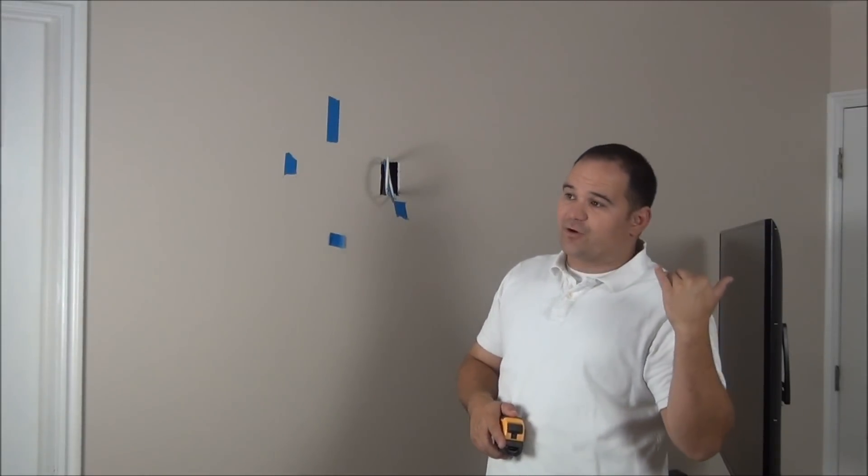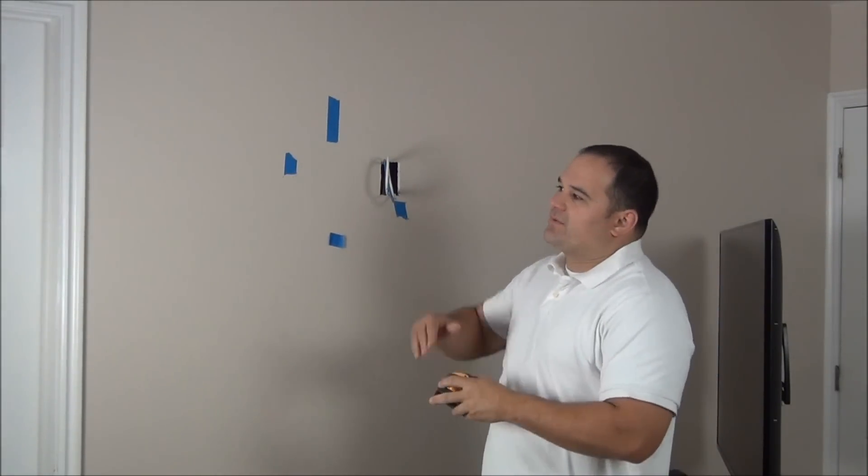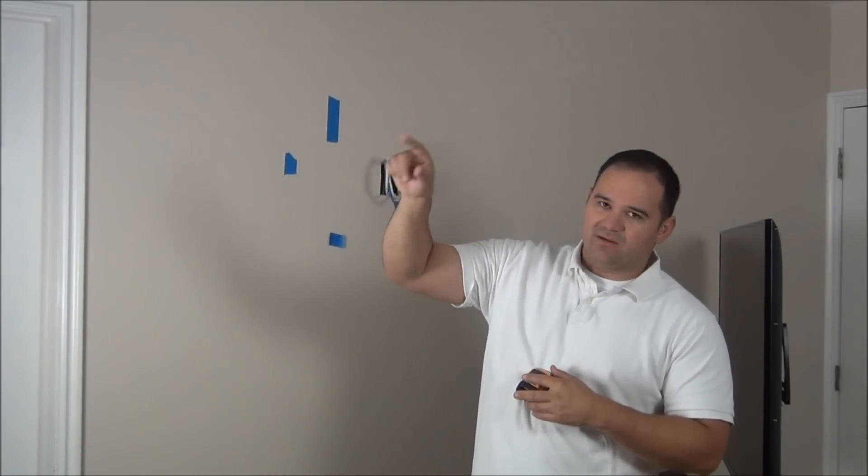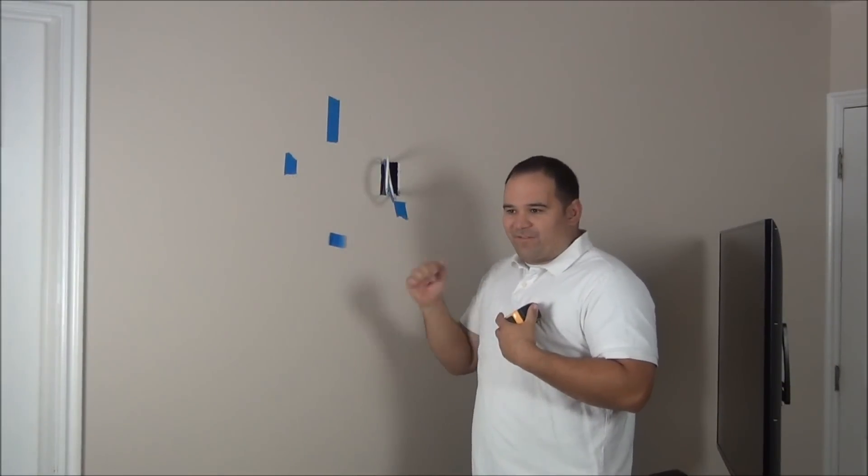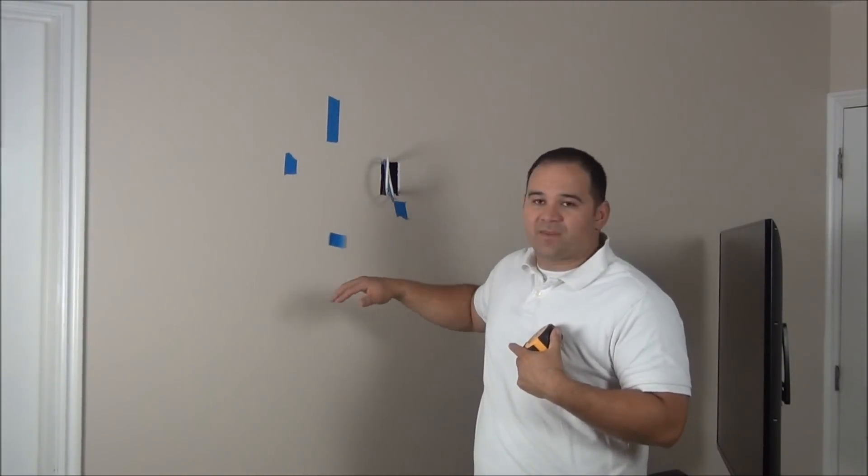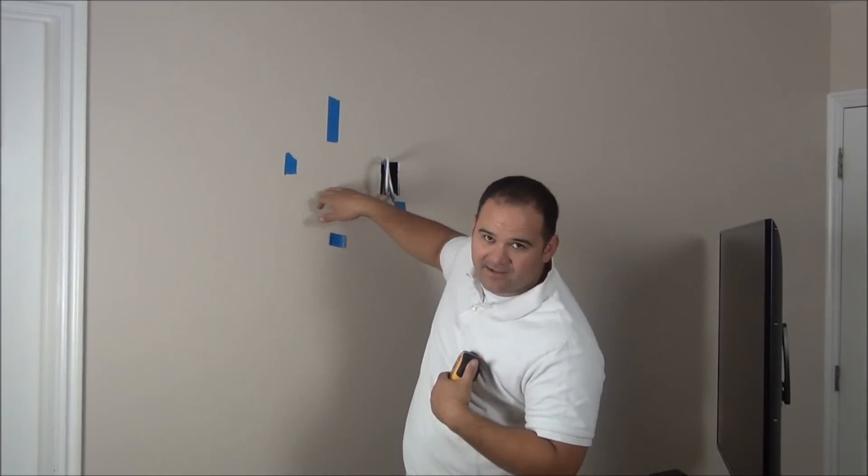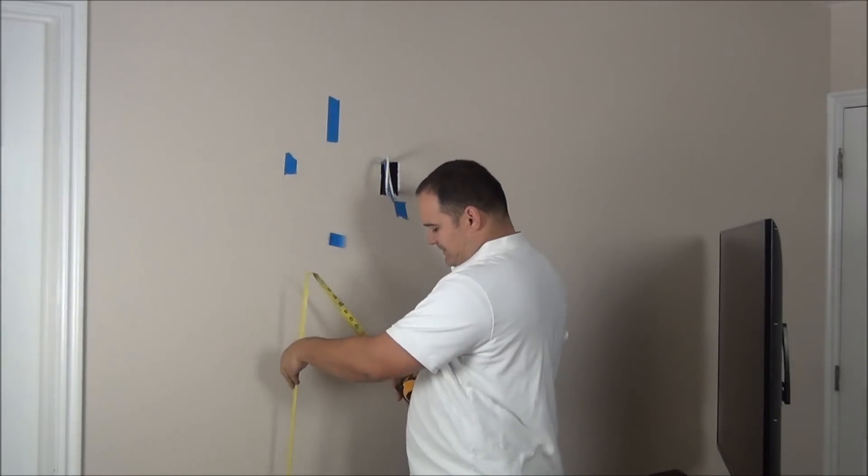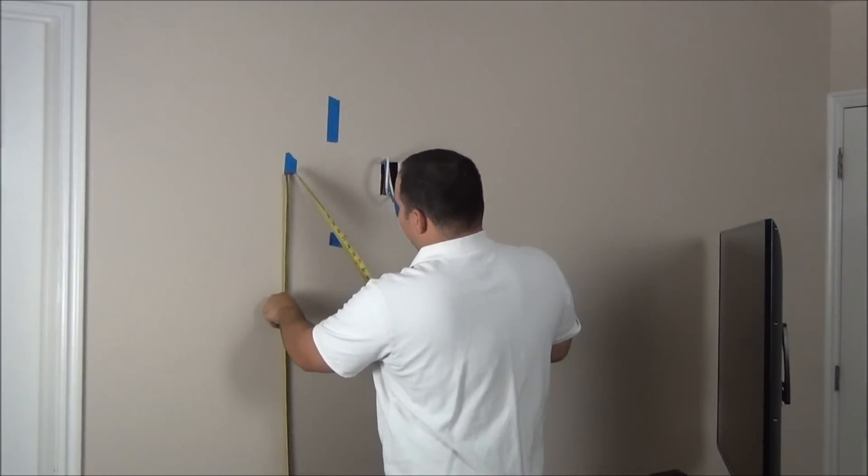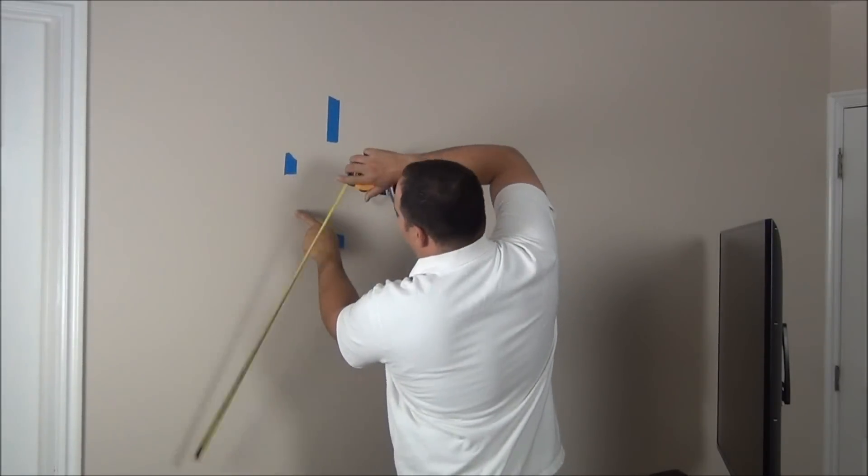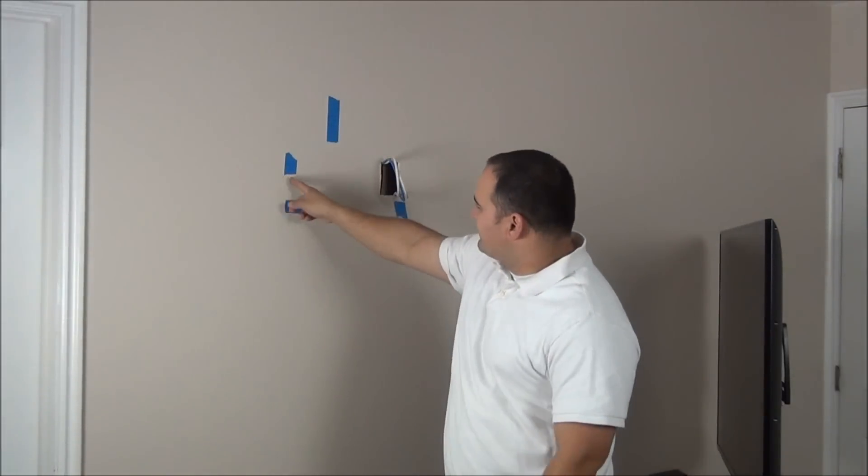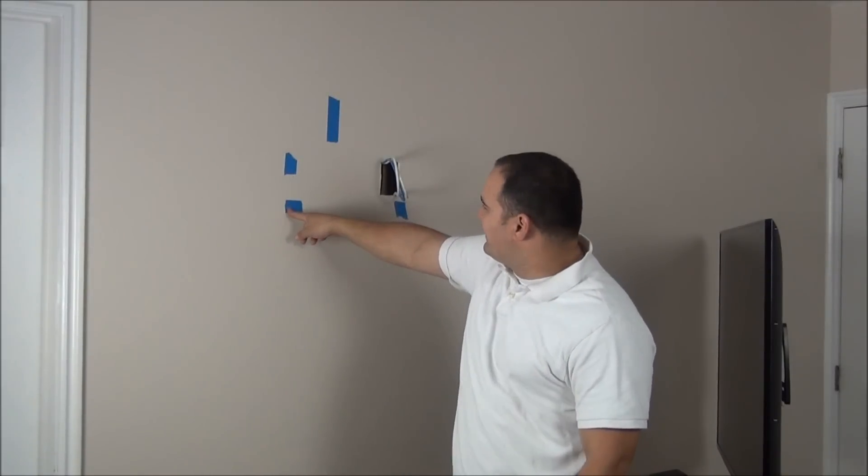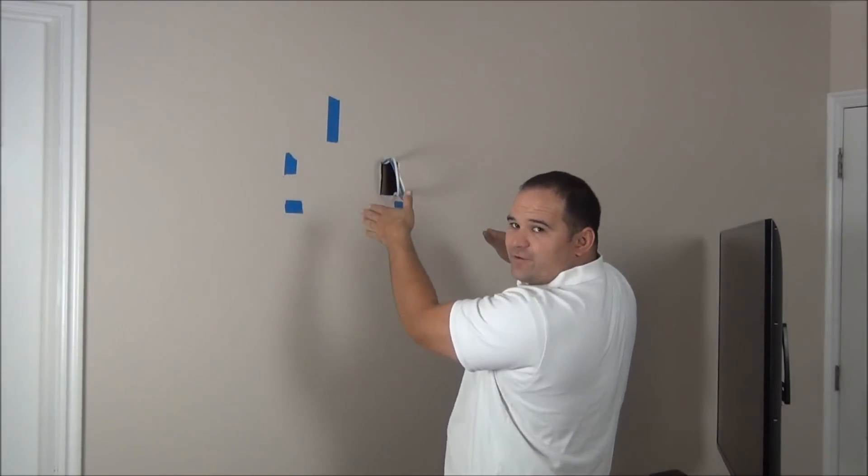If you remember our measurement that we found earlier, from the bottom of the TV to the bottom part of the bracket where I'm going to put a bolt, it's 11 inches. I, off camera, found out that I wanted my TV to be 52 inches to the bottom of the TV. So 52 plus 11 is where my first bolt hole is going to be. So that's 63. 63 inches is right there. Center of the stud. Bottom bolt hole right there. This is going to be the bottom left corner of my wall bracket.